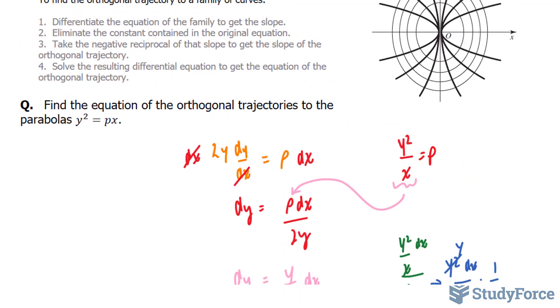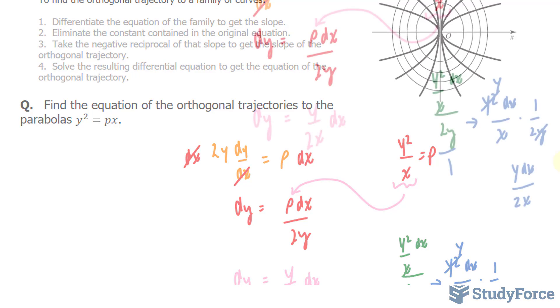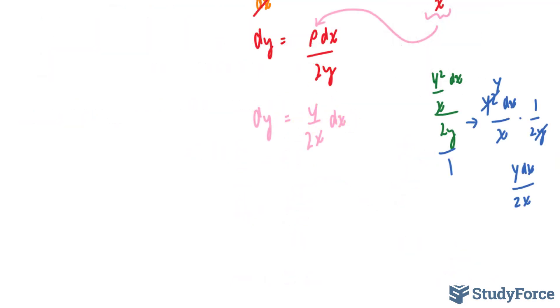In step number three, they say take the negative reciprocal of the slope to get the slope of the orthogonal trajectory. So if I divide both sides now by dx, I end up with dy/dx, y/2x is my slope. I need to take the negative reciprocal for this, because these slopes are perpendicular to the actual slope. So we take the negative reciprocal, flipping this. dy/dx = -2x/y.